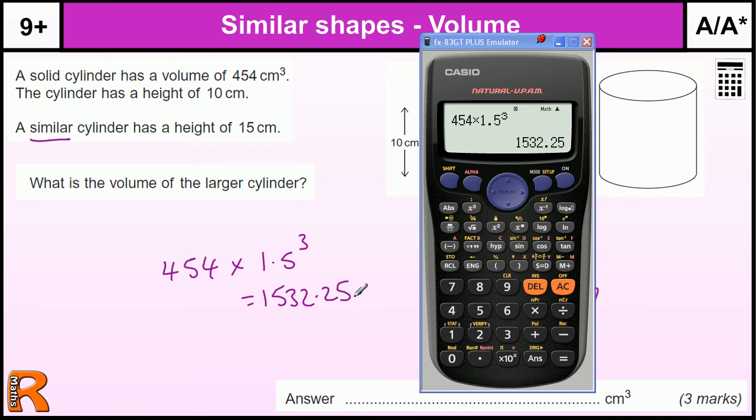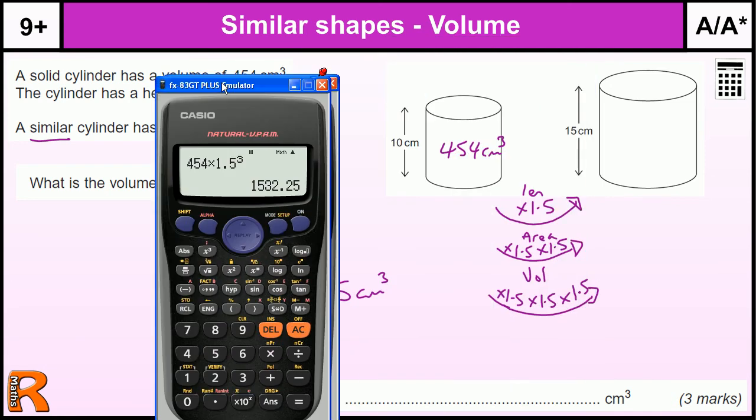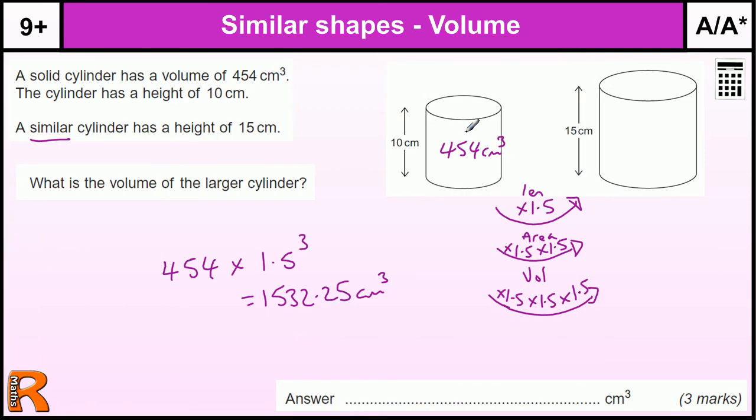Now that's the best way of doing this question. It's much quicker than the alternative. The alternative is to use this volume to find the radius of this circle, which a lot of students would do and try to do.